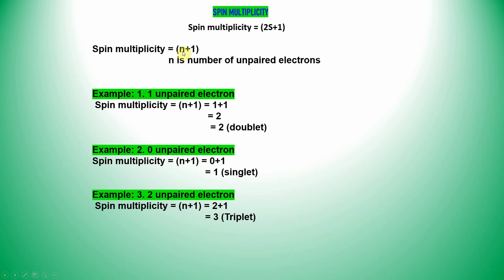Here N is the number of unpaired electrons. If you have one unpaired electron you write 1, two unpaired electrons you write 2, three you write 3, five you write 5. For one unpaired electron: spin multiplicity equals N plus 1 equals 1 plus 1 equals 2. That means doublet. If your system has 1 unpaired electron, you need to write spin multiplicity 2.